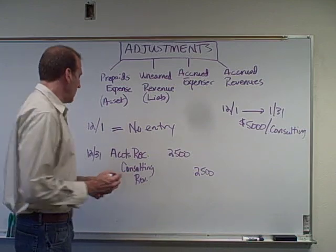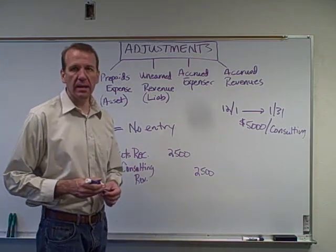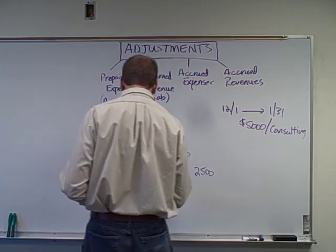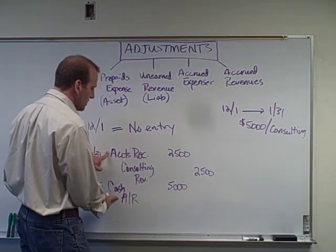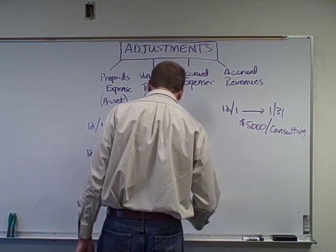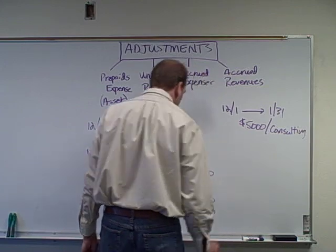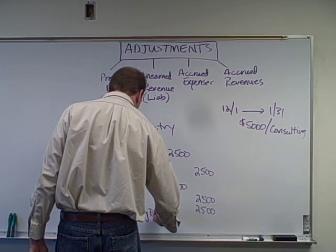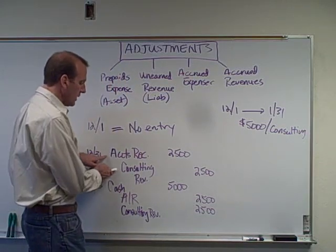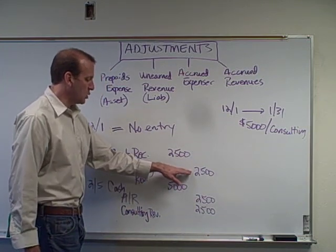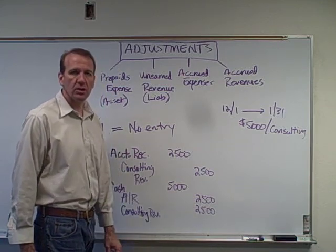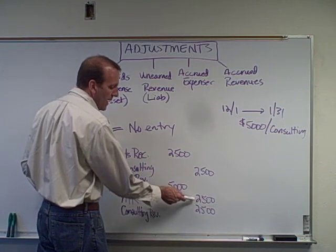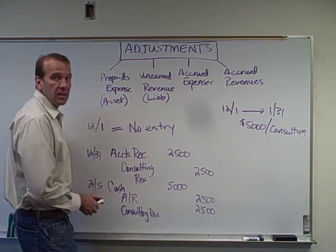Now let's say on February 5th they pay us the remaining money they owe us. We would record cash of $5,000, eliminate the accounts receivable of $2,500 since they've paid us, and recognize our remaining consulting revenue of $2,500. This is an accrued revenue — we recognize $2,500 in year one when we earned it, and the other $2,500 in year two. The accounts receivable gets established and then eliminated when we receive the full $5,000 cash payment.